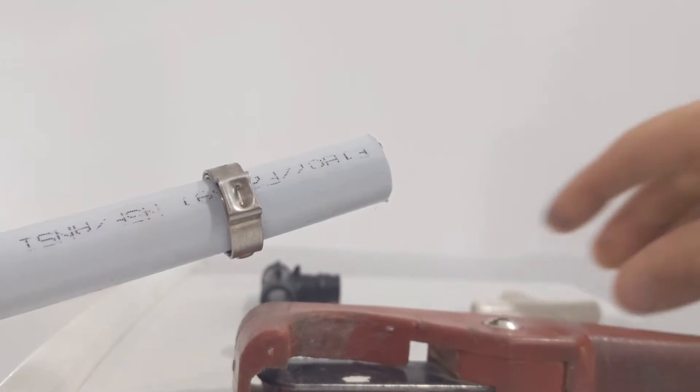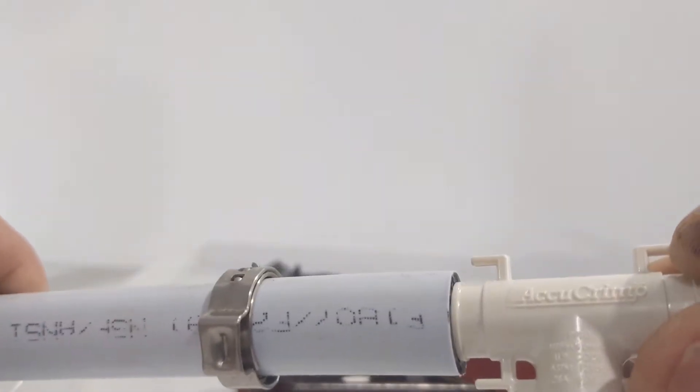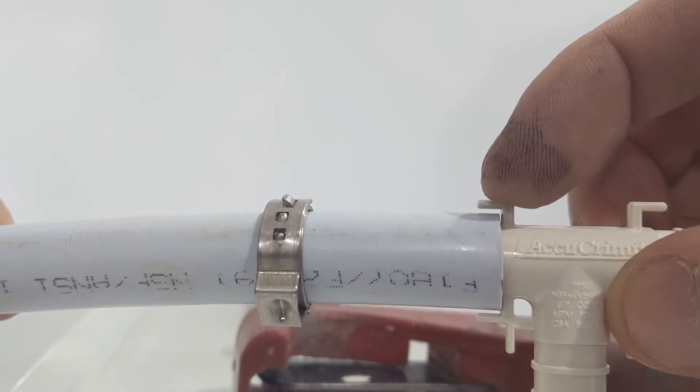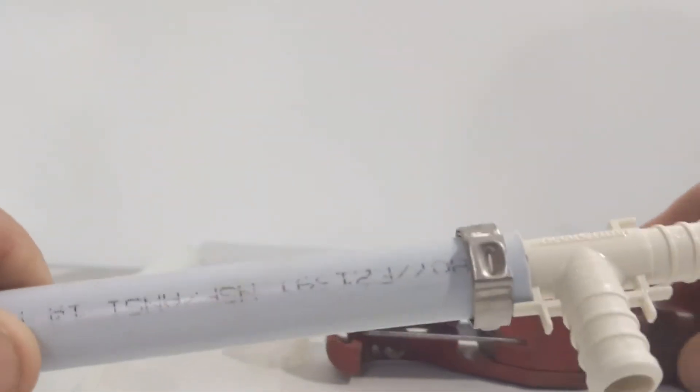The next thing you want to do is grab your fitting, and you'll notice on this type of fitting, it actually has stoppers on it, which is nice. Because what that tells you is where your crimp fitting should be going to. So your crimp fitting is not going to go any further than that.